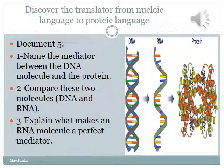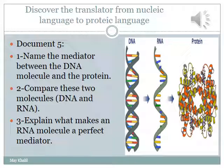Our problem will be solved here. Try to find a mediator between the two macromolecules — the DNA molecule and the protein molecule. You will find that the mediator is a simpler molecule than DNA, and its name is RNA.